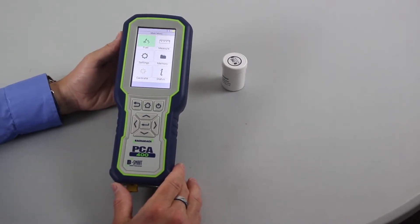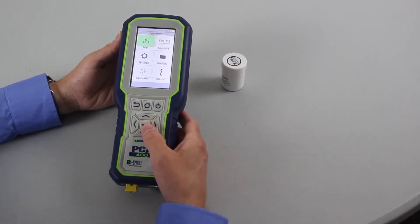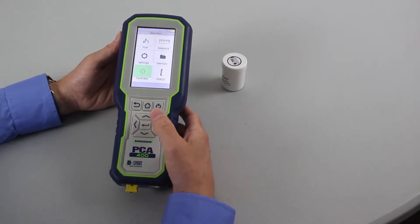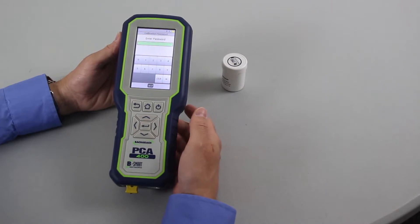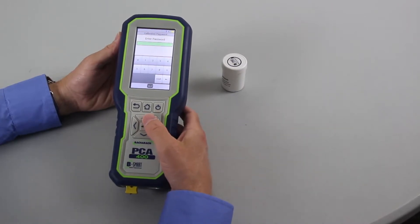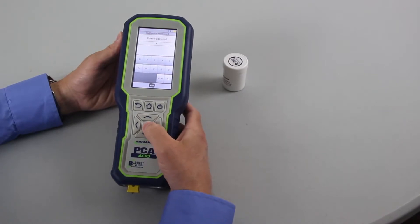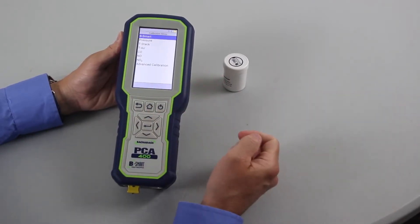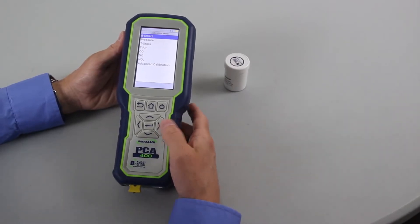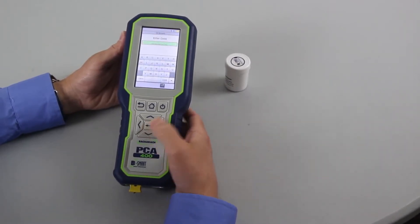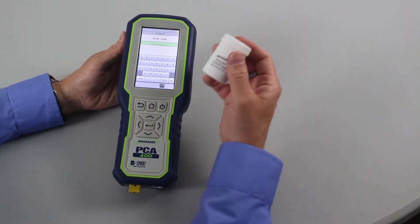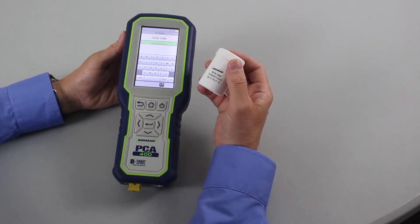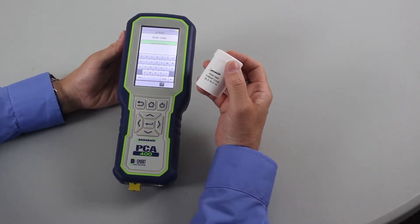At the end of the warmup, you're taken to the main menu. To enter a B-Smart code, navigate to the calibrate menu and press enter. At that point, you will need to enter the default calibration password of 1111. From the calibration menu, enter into the B-Smart menu, and then enter the alphanumeric code from the sensor canister.